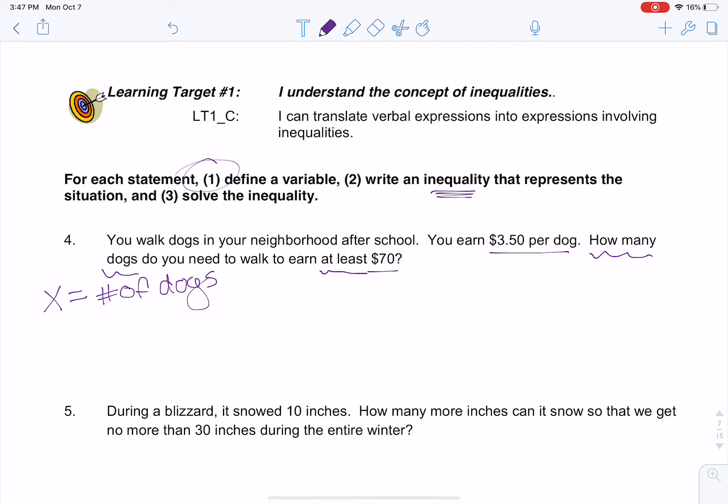Now I'm going to write that inequality that represents the situation. So how many dogs do I need to walk if I earn $3.50 per dog? So every dog that I walk, I get $3.50. So that means if I do $3.50 times x, I should figure out how much money I'm going to get. Now it says I need to have at least $70. So if you remember from our previous learning target, if I need to earn at least $70, that means I need to actually make more than $70. That's the least amount I can make. So this needs to be more than, or it could be equal to, $70.